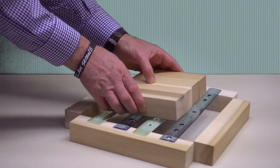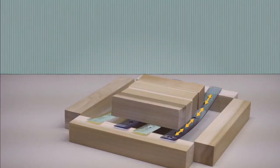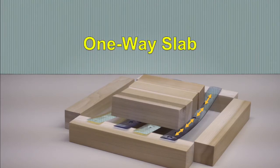If a slab is curved in only one direction, the load must be carried entirely by stresses in that direction, and it is called a one-way slab.